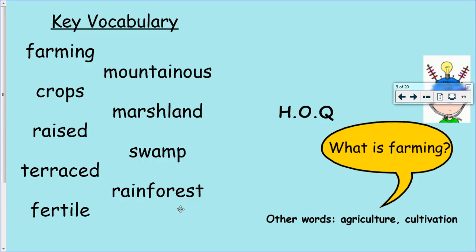Some of the key vocabulary we will see today: farming, crops, raised, terraced, fertile, mountainous, marshland, swamp, and rainforest. I will explain these if you don't know what they are as we go through.